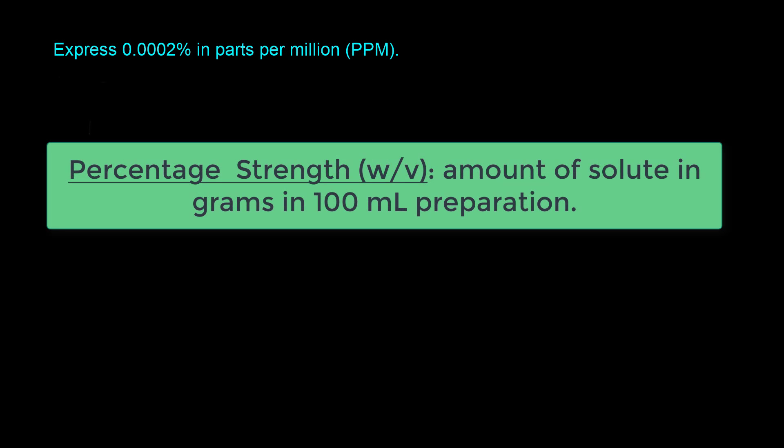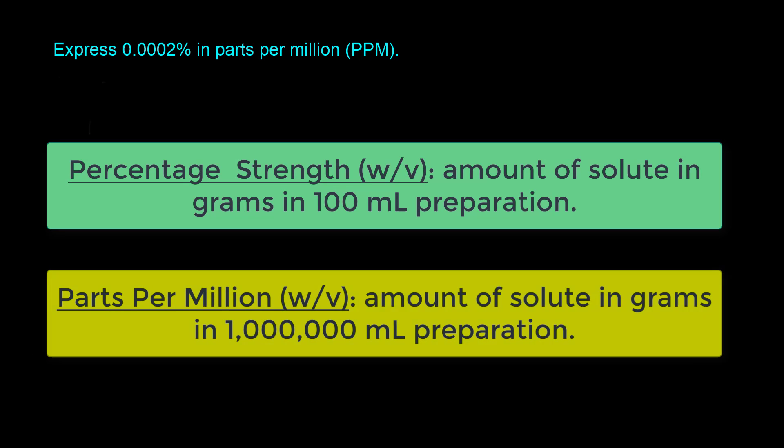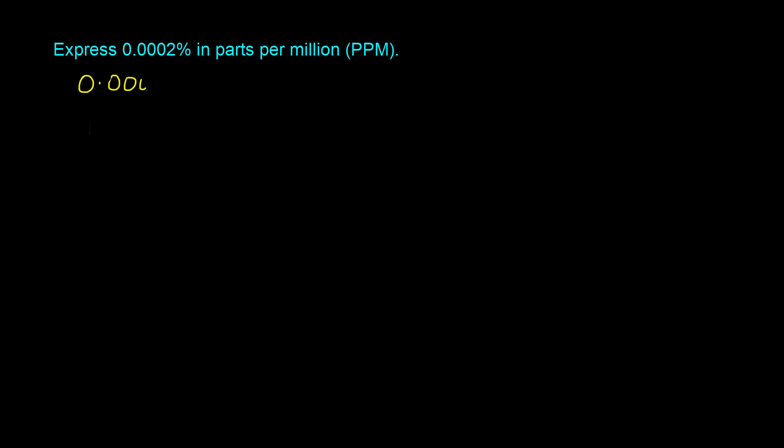Let's take a look at the first question and go through the typical process by which you convert percentage strengths to PPM. The question reads: express 0.0002% in parts per million. The way you normally would solve this is to recall the definition of percentage strength, which is some quantity in grams out of 100 milliliters, and then the definition of parts per million, which is some quantity in grams out of a million milliliters. So for 0.0002%, you have 0.0002 grams in 100 milliliters.